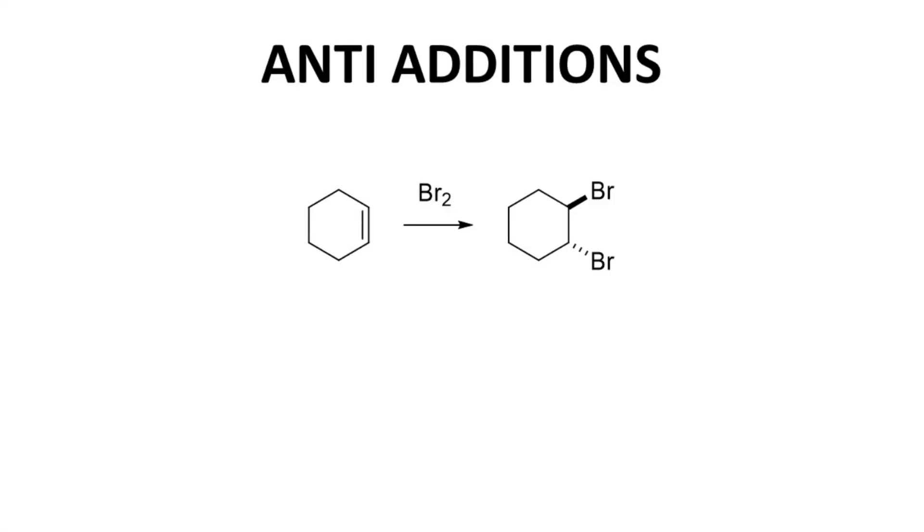Here is a reaction you've likely seen before. This is a dibromination of cyclohexene. Dibrominations are anti-additions. So the product here has one bromine on the top face of the molecule and the other bromine on the bottom face.